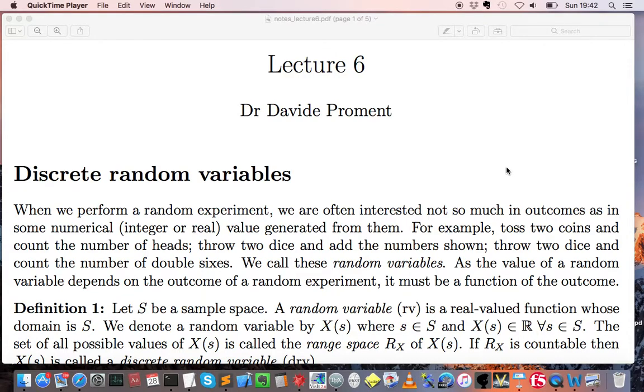In the sixth lecture of probability theory, we started the second chapter of this module, that is the one dealing with discrete random variables.